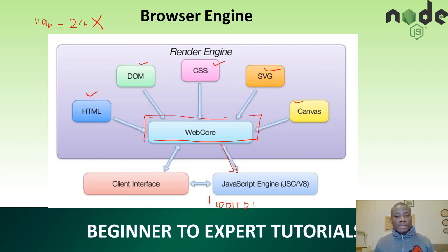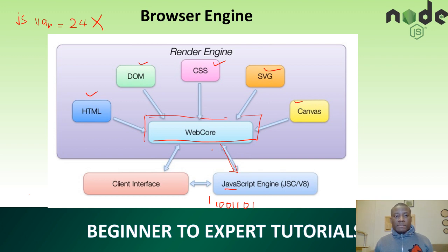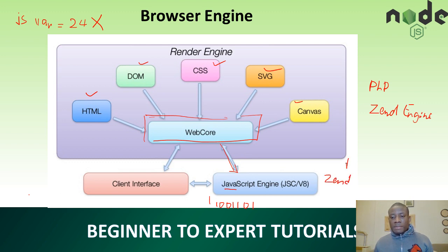When you write JavaScript code and it passes through the browser engine, the JavaScript itself is interpreted by a JavaScript engine, which is a component of the browser engine. Now there are different kinds of engines — for instance, PHP is interpreted by the Zend engine. So the Zend engine handles PHP, while JavaScript is interpreted by the JavaScript engine.